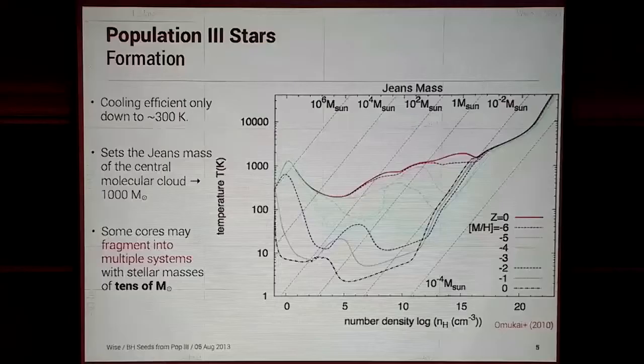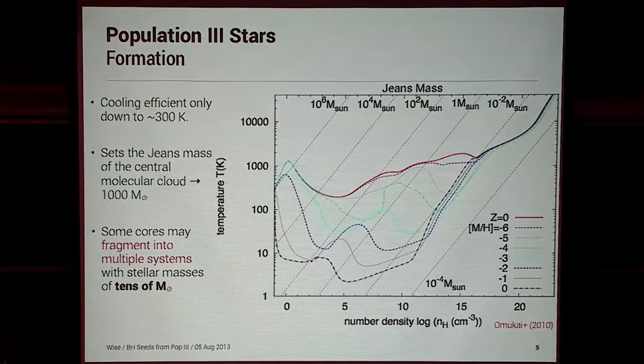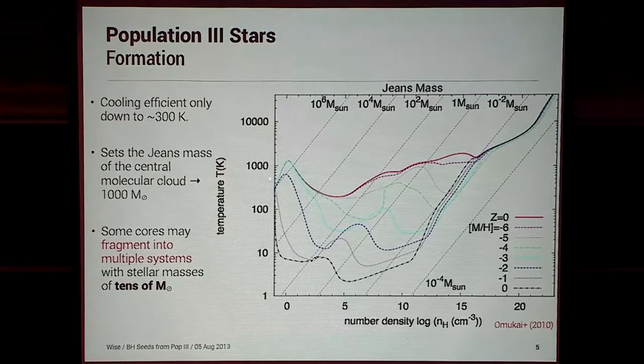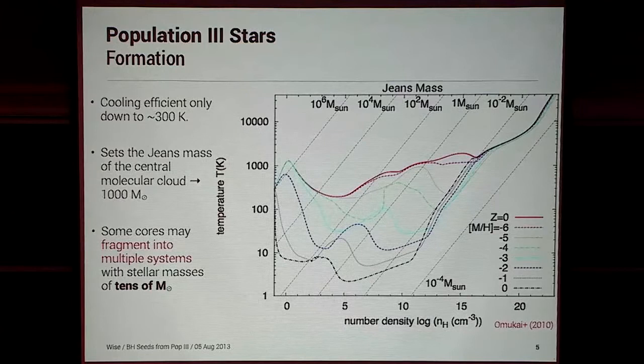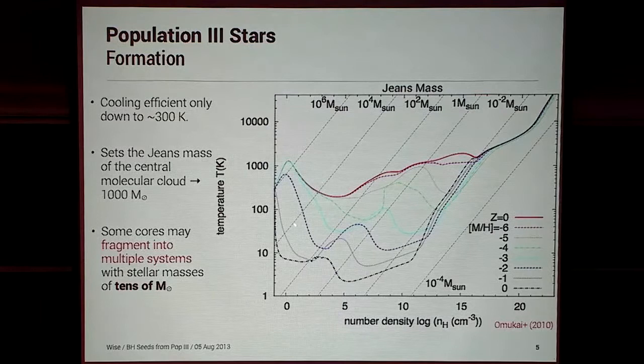Because we don't have any metals, it's not like present-day star formation. This is a graph from Omakai's 2010 paper showing one-zone models of how the equation of state actually behaves. The red line shows temperature as a function of density: it heats adiabatically, then cooling becomes important, and you bottom out at 300 Kelvin. This dip sets the Jeans mass on which fragmentation actually occurs — the central molecular core Jeans mass is around 1,000 solar masses. Once you start increasing the metallicity, you can cool down all the way to 3 Kelvin.